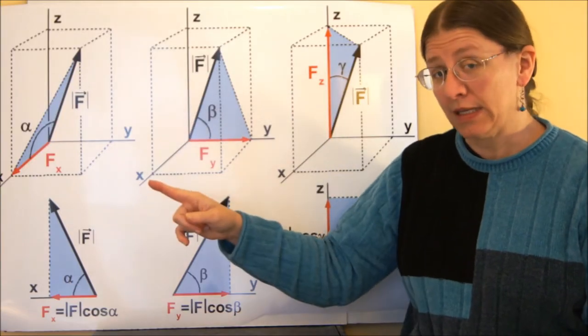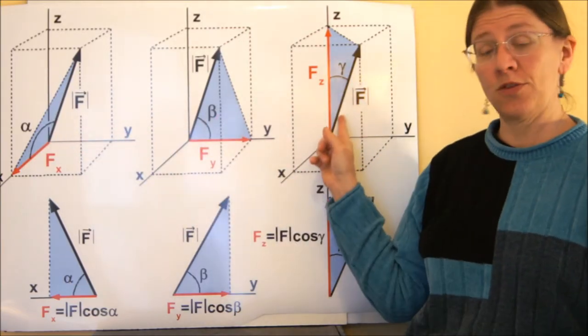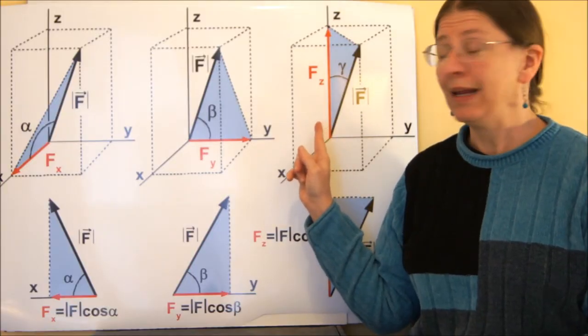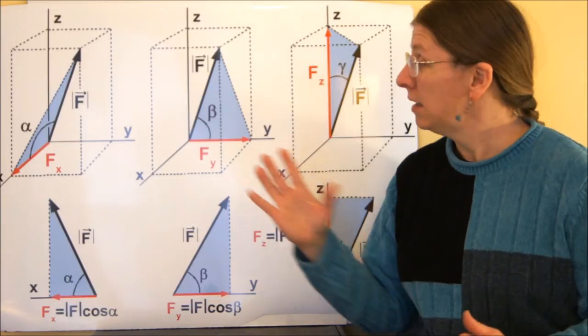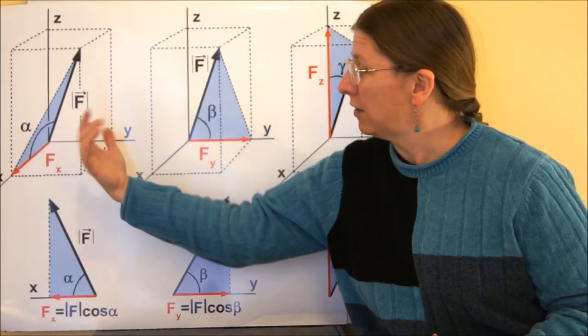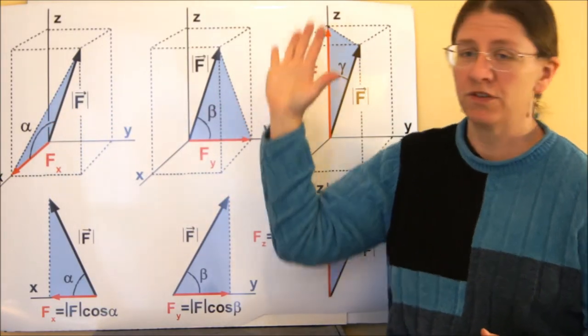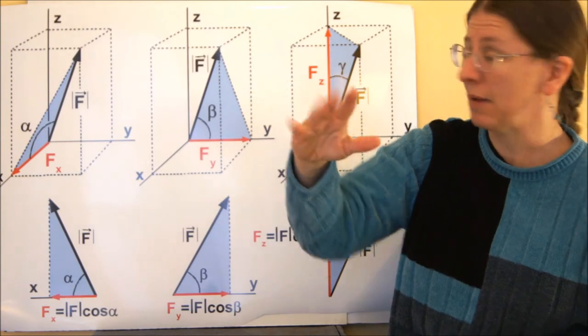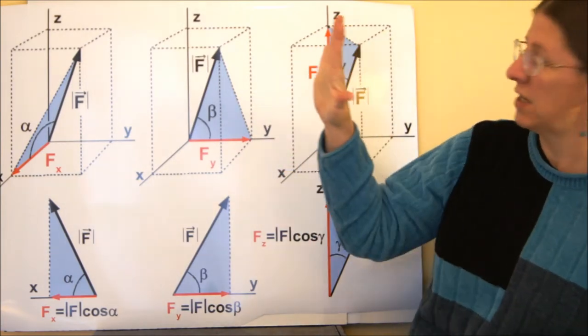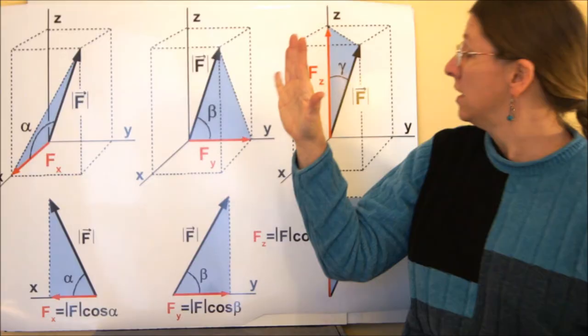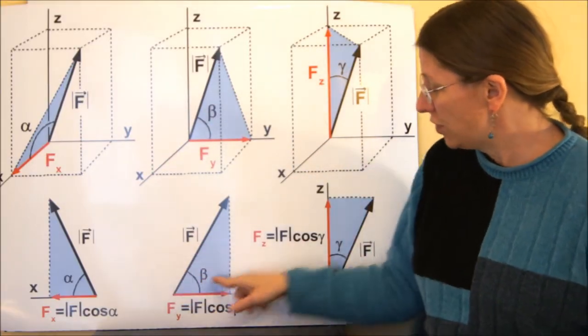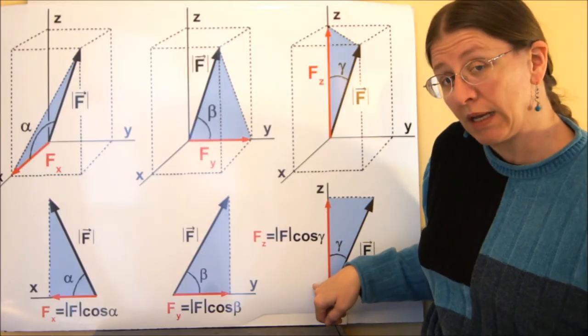As you do this, note that none of these three triangles, none of these blue triangles, are in any of the planes. So this blue triangle is sort of tilted this way. And this blue triangle is sort of tilted toward you out of that back plane. And this one is sort of rotated around like this. So these three angles, if you drew just the triangles, you'd have alpha, beta, and gamma like this.